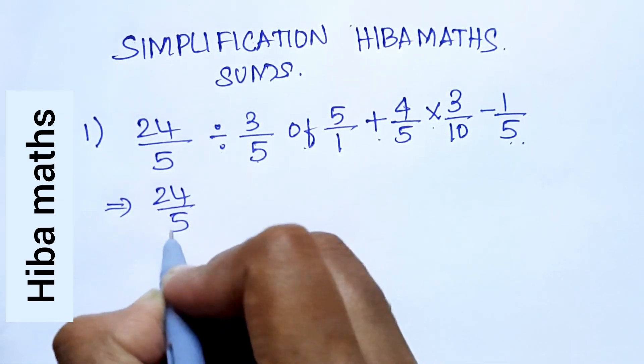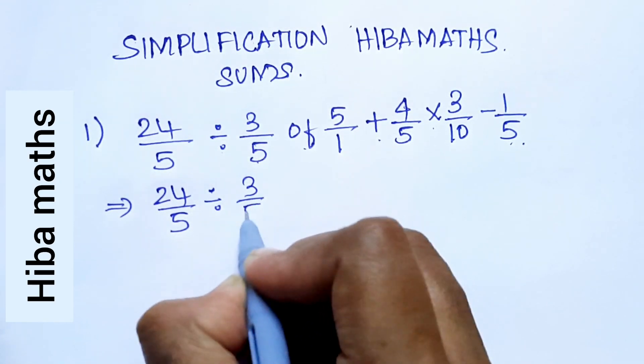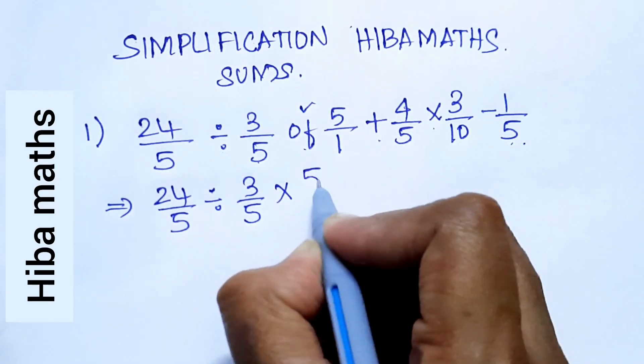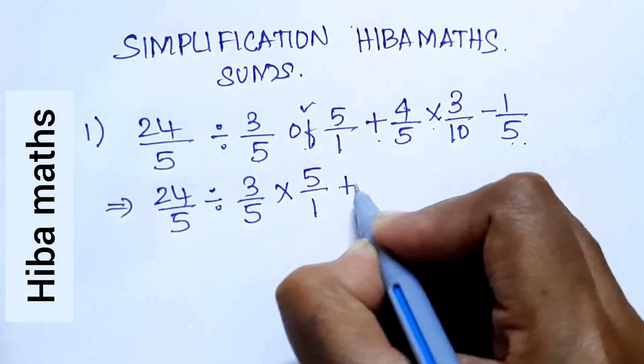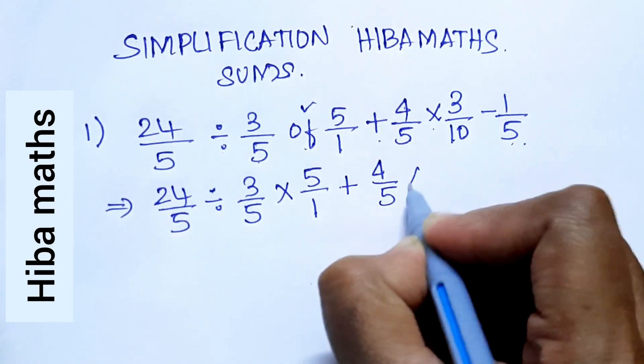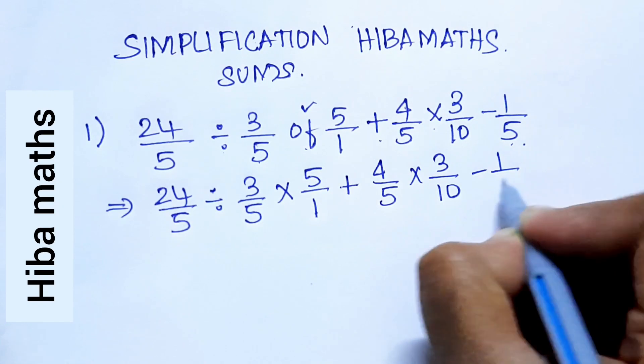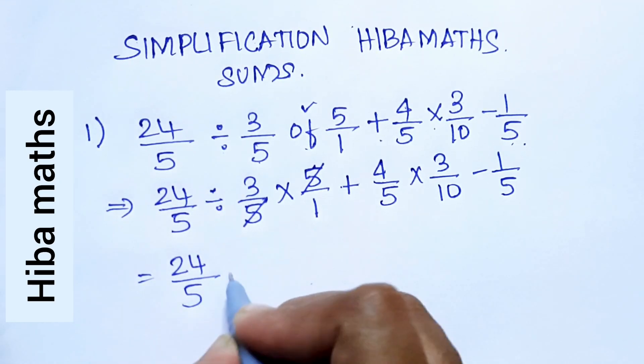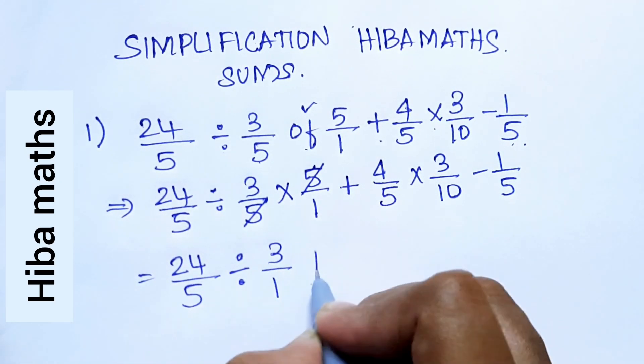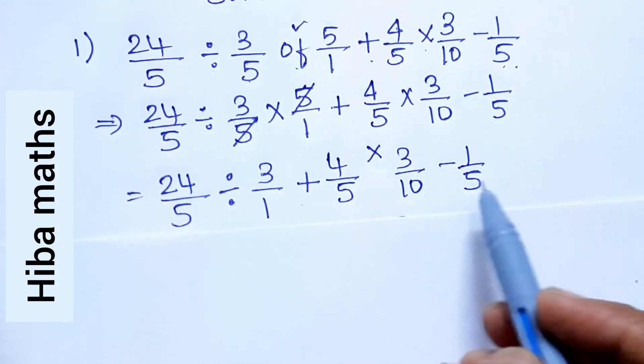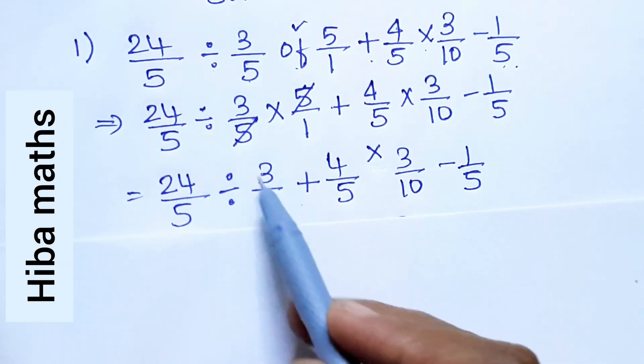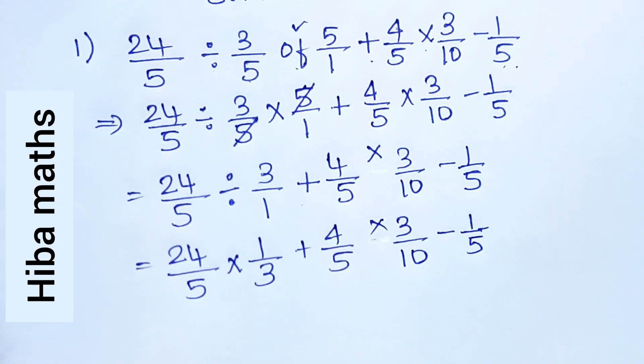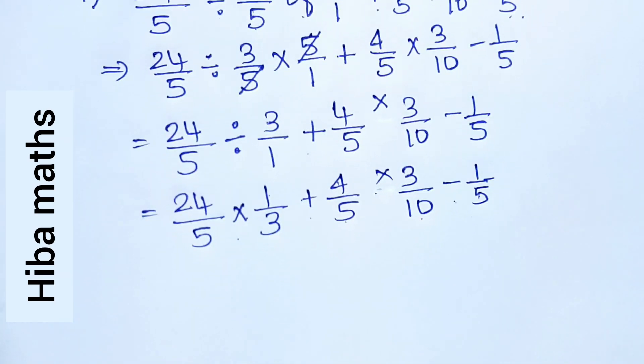24 by 5 divided by 3 by 5. First do the multiplication. When we solve it, 3 by 1 is 1 by 3. Next line: 24 by 5 into 1 by 3 plus 4 by 5 into 3 by 10 minus 1 by 5.